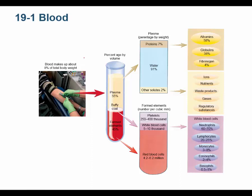When blood is drawn by a phlebotomist, different colored-top tubes are used. The color tells the phlebotomist what test is ordered because each tube contains different anticoagulants — or in some cases no anticoagulant at all. The colored top indicates what will happen with the blood after collection.